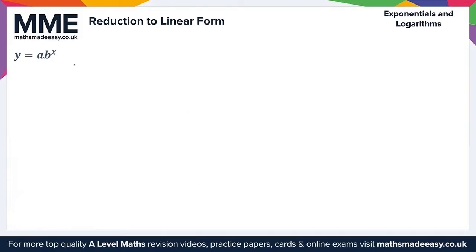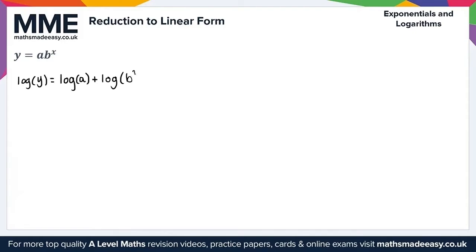Moving on, let's take a look at the form y equals ab to the power of x. Again, we start by taking the logarithms of both sides. So we obtain log y is equal to the logarithm of ab to the power of x. Splitting this up as a product, we get log a plus the logarithm of b to the x. Applying the power rule, we bring the x to the front, giving us log y is equal to log a plus x log b.